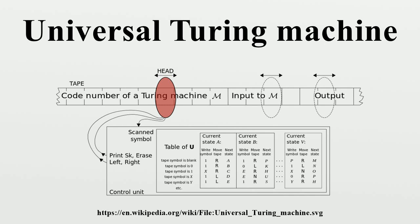Every Turing machine computes a certain fixed partial computable function from the input strings over its alphabet. In that sense it behaves like a computer with a fixed program. However, we can encode the action table of any Turing machine in a string.